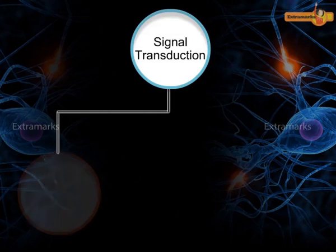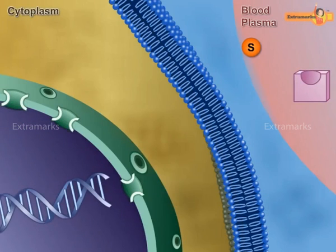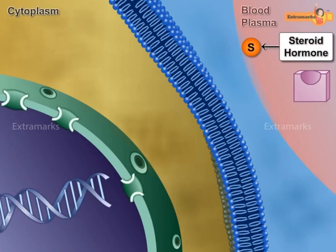The signal may be transmitted directly or via cascade pathways involving many proteins. The signaling molecule called cortisol is a steroid hormone.